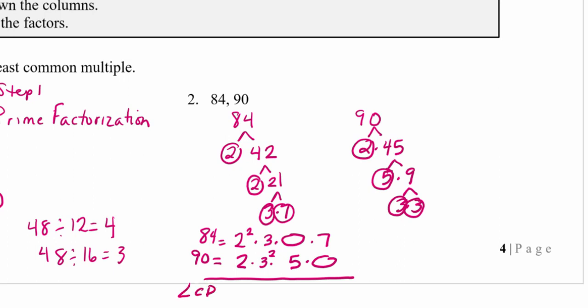Now we build the least common multiple by taking the biggest factor from each column. For 2s: we have 2 to the 1st and 2 squared, so we take 2 squared. For 3s: we have 3 squared. We also have one 5 and one 7. So our least common multiple is 2 squared times 3 squared times 5 times 7, which equals 4 times 9 times 5 times 7 — that's 1260.